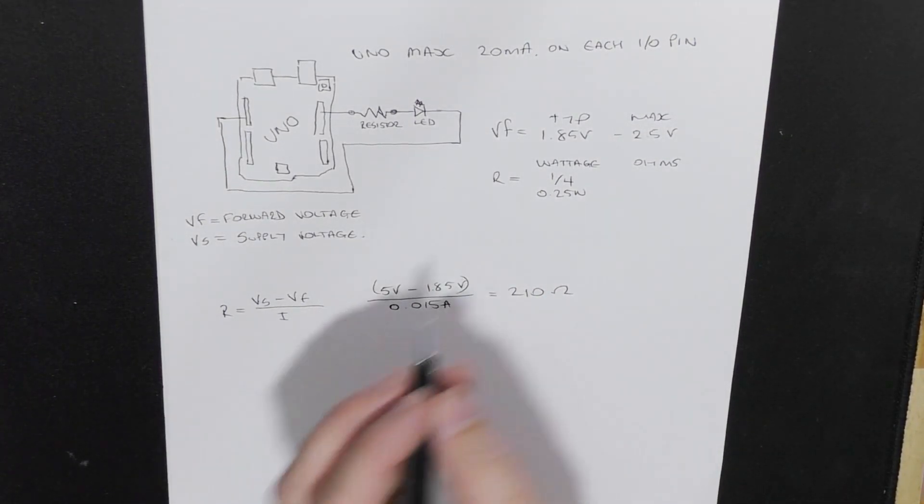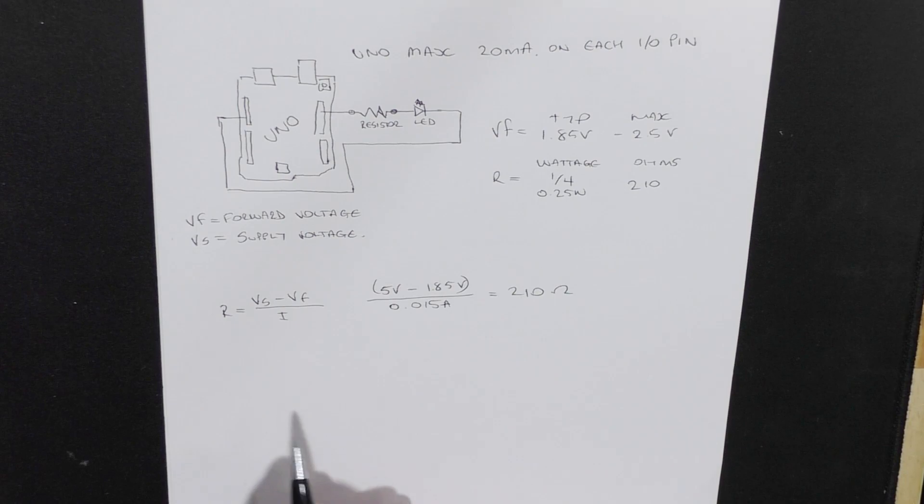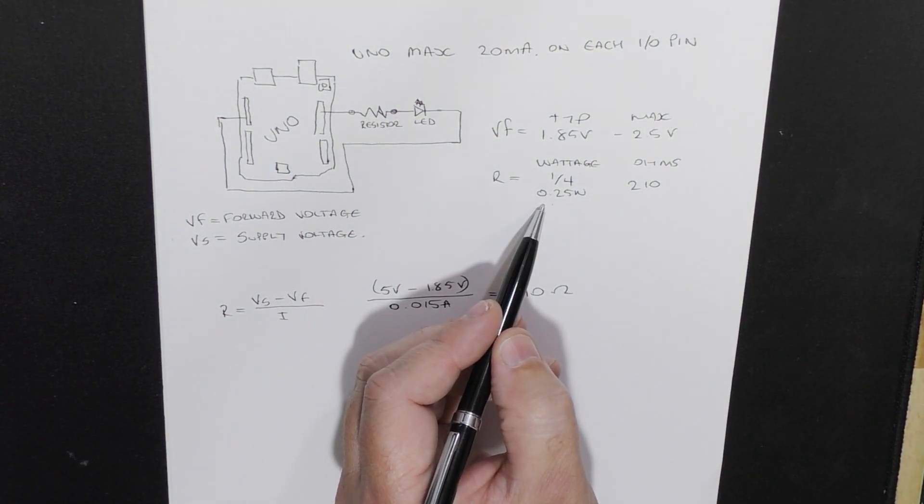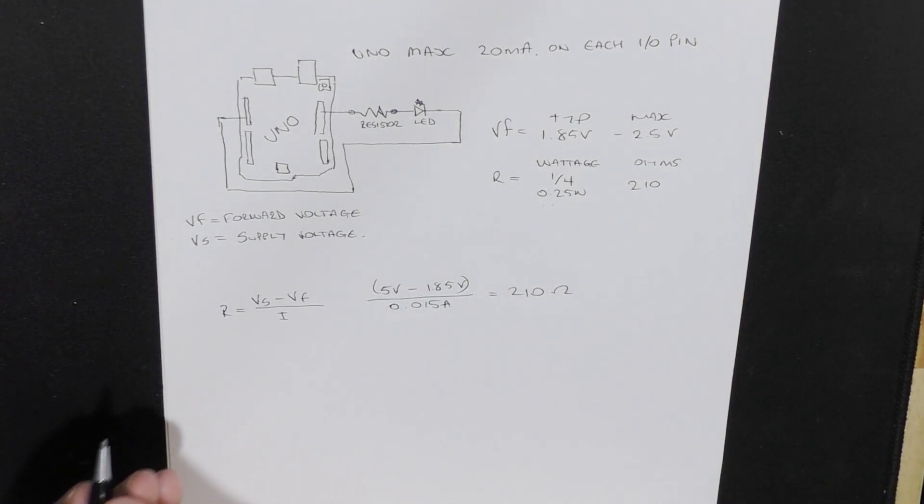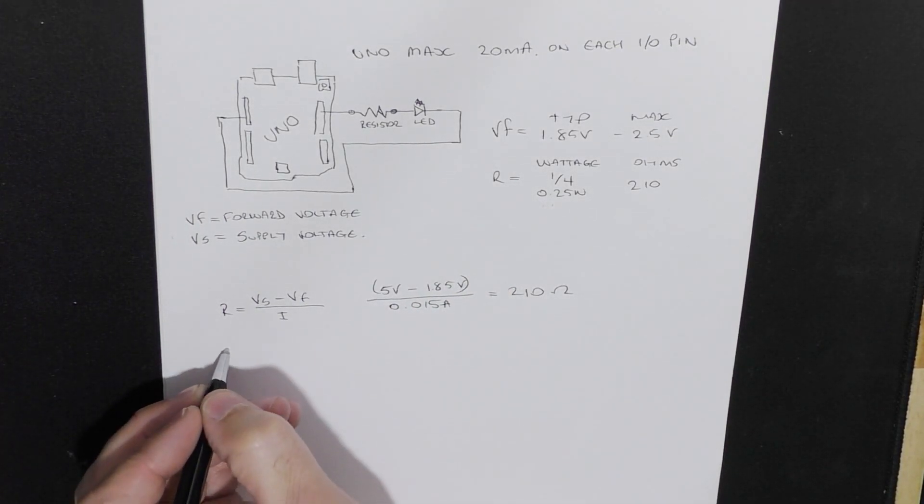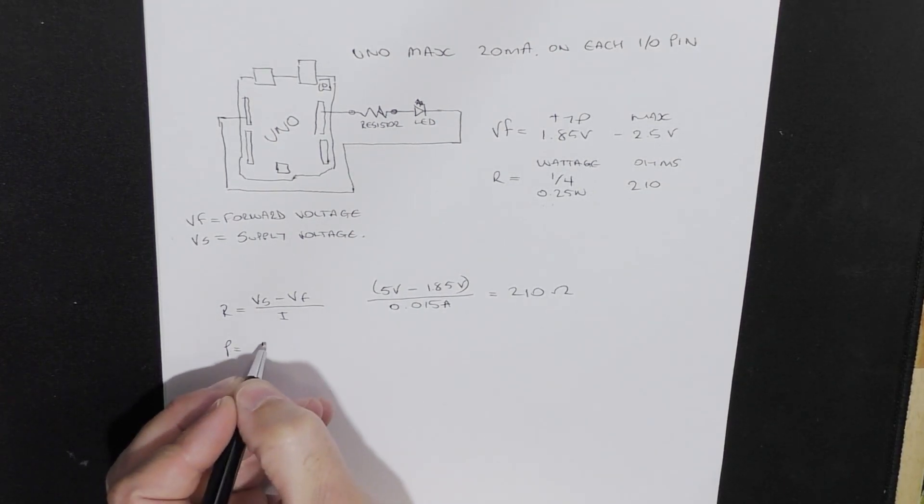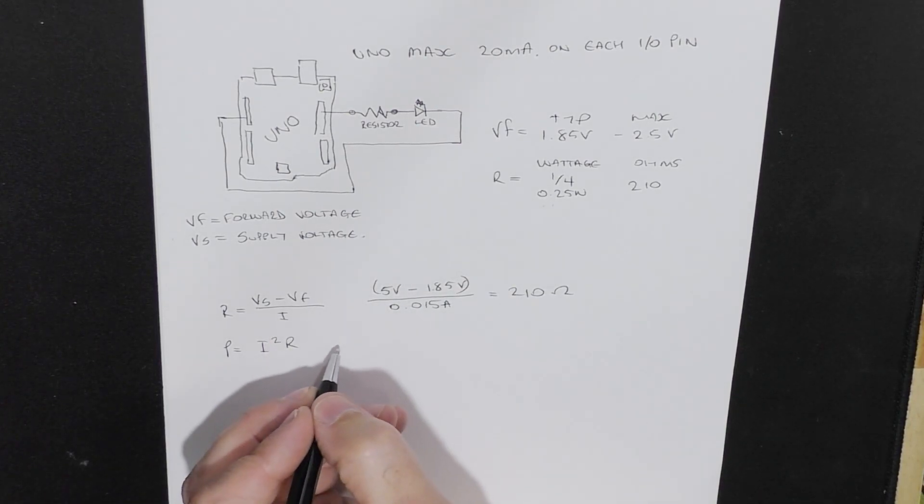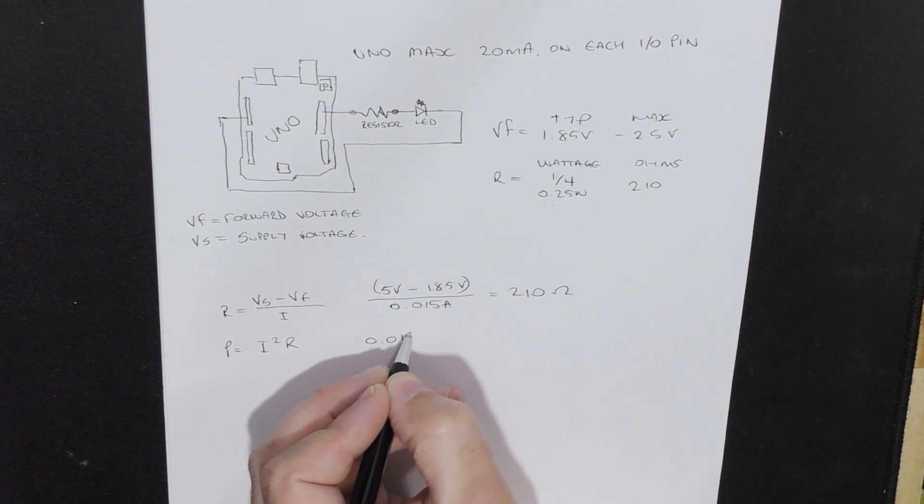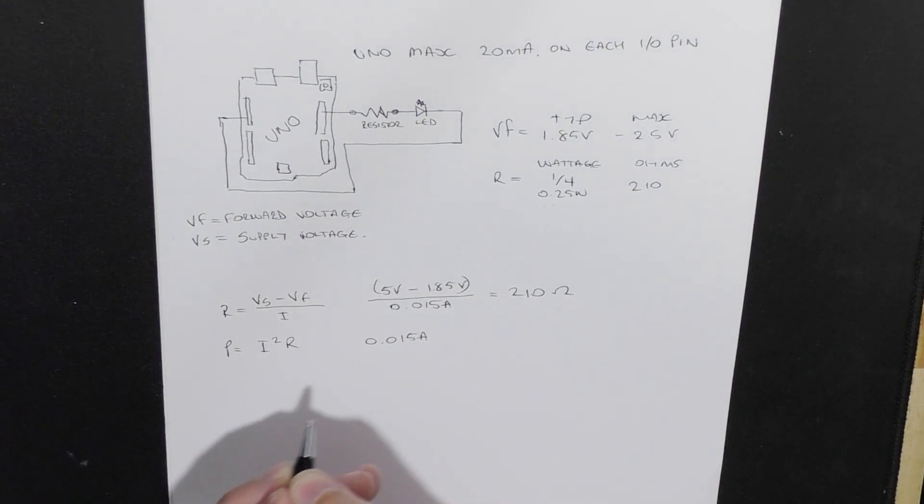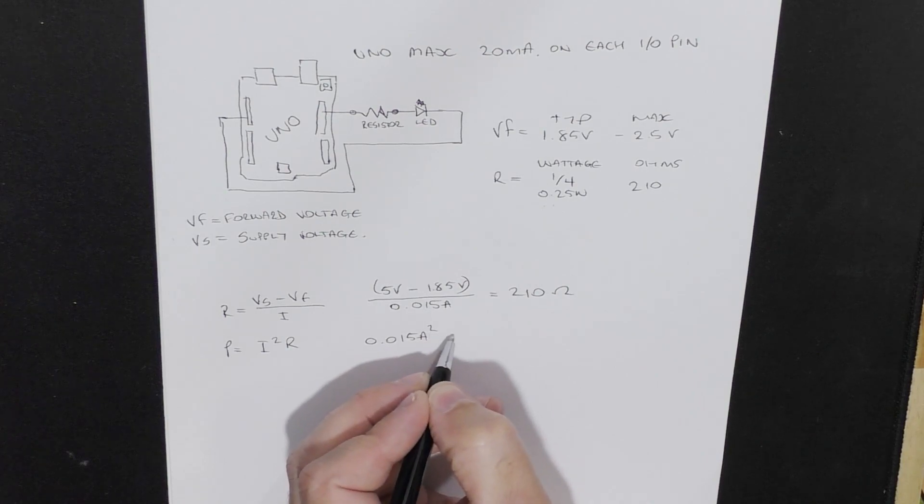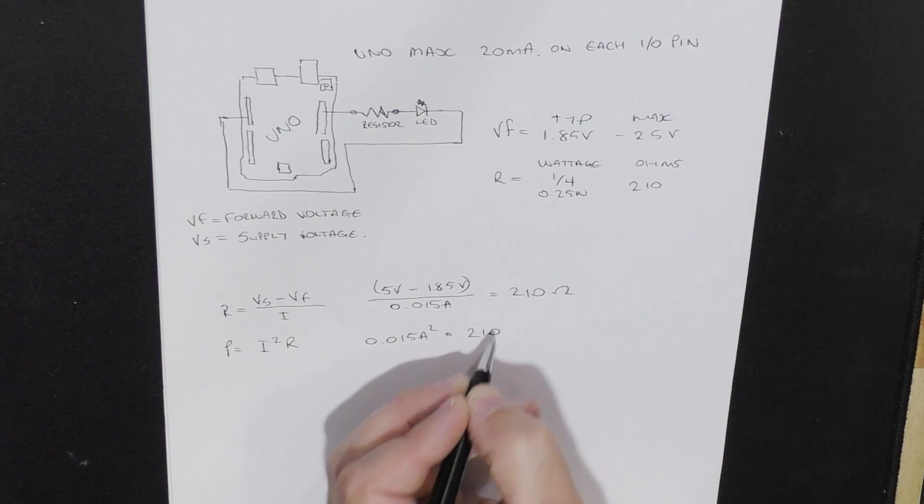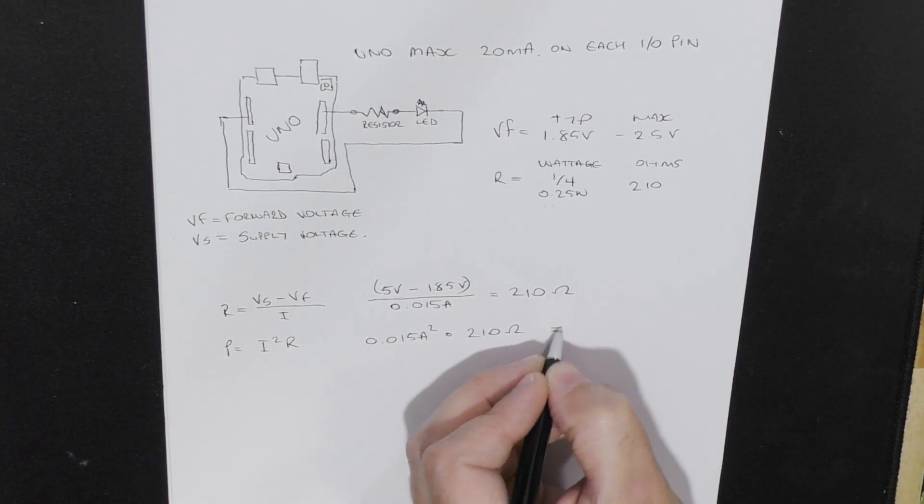Alright. So now we know the ohm rating. So we want to know if we'll be right with a quarter watt resistor. So there's different formulas you can work out. But one of the easy ones is P equals I squared R. Now we know the current that we want is 0.015 amps. So 15 milliamps squared multiplied by 210 ohms equals.